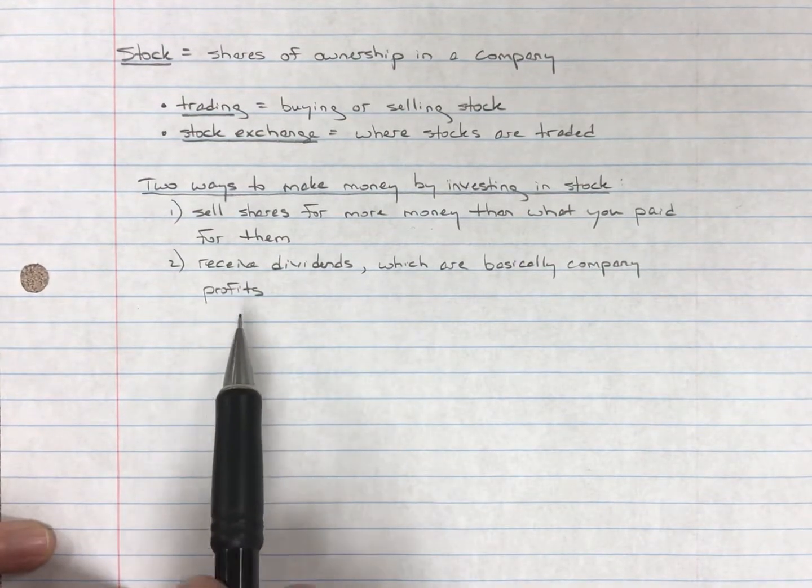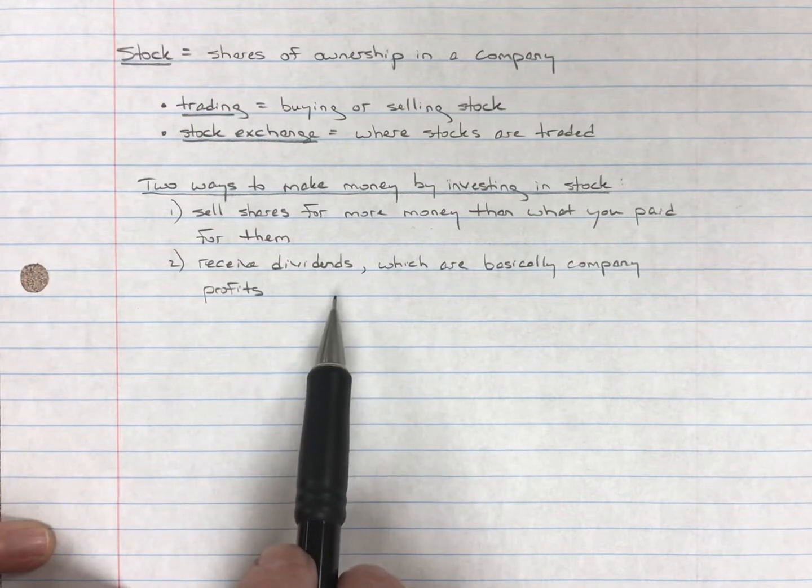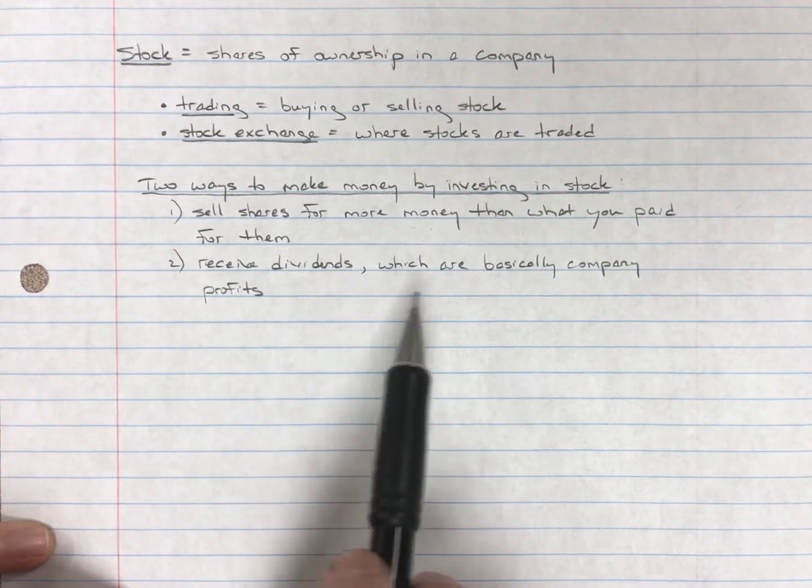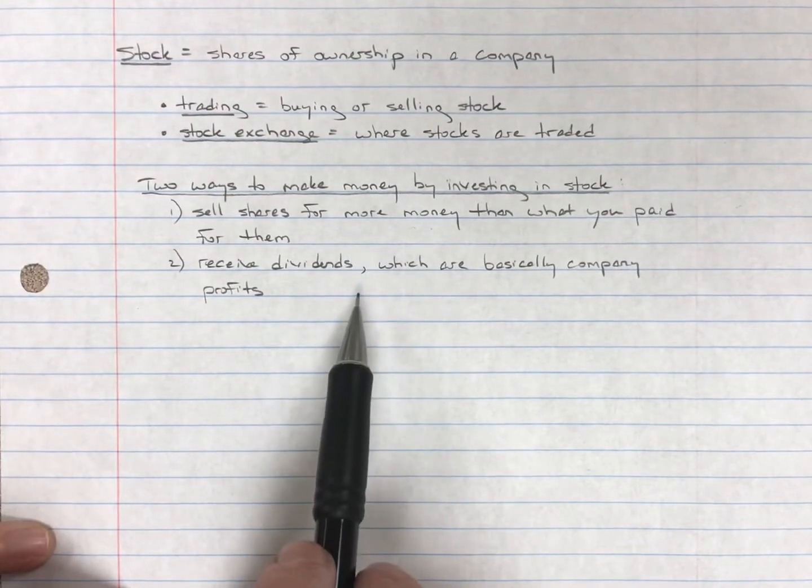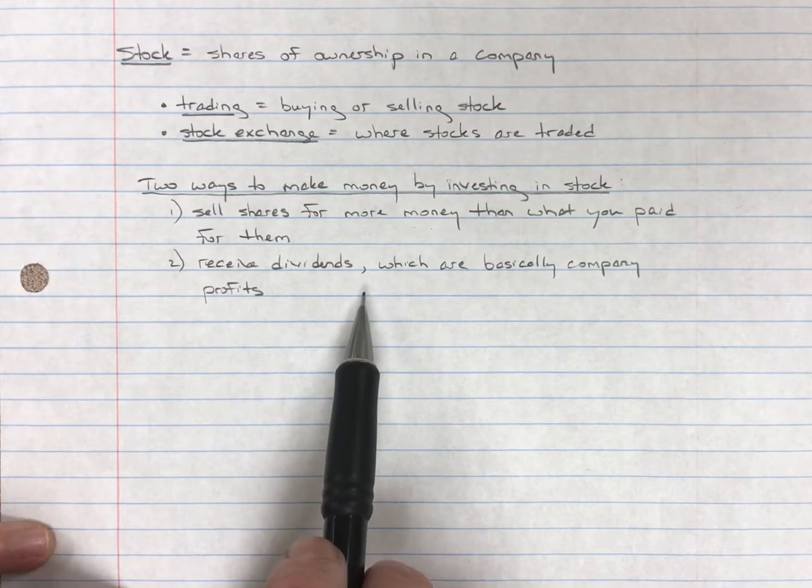They might pay out a dollar per share as a dividend, as profit. And everyone who owns a share gets a dollar. If you own 1,000 shares, you get $1,000, et cetera. So those are the two ways to make money by investing in stock.